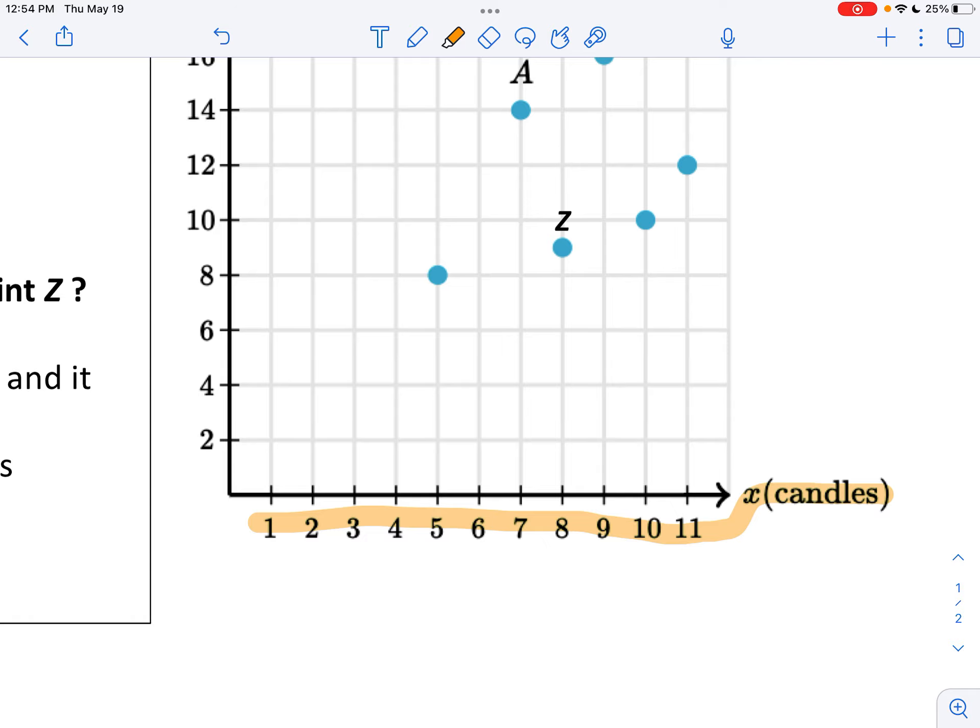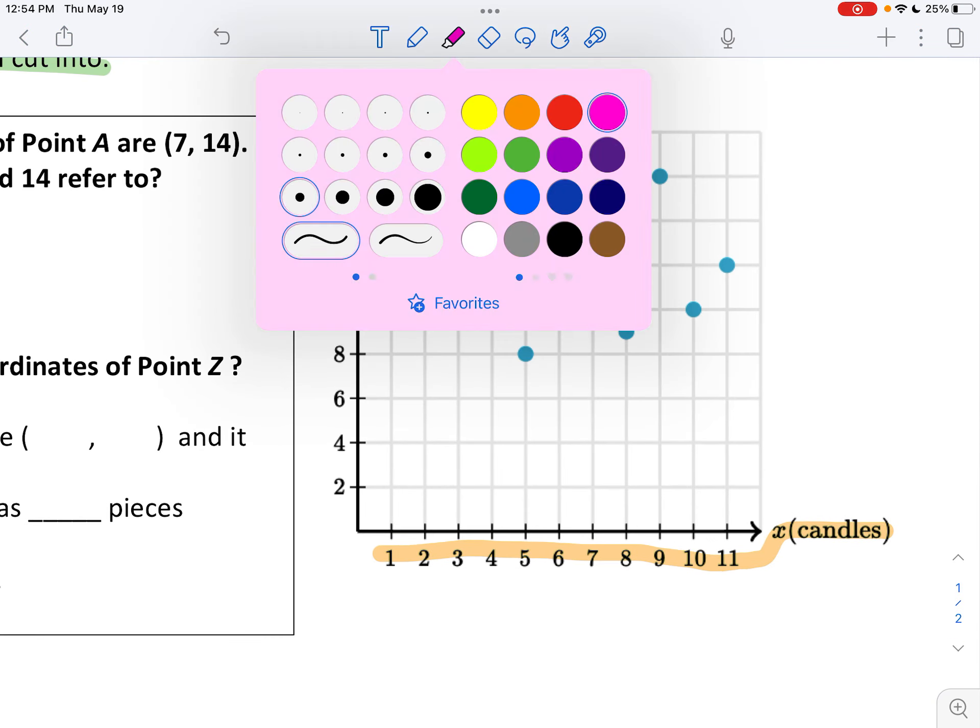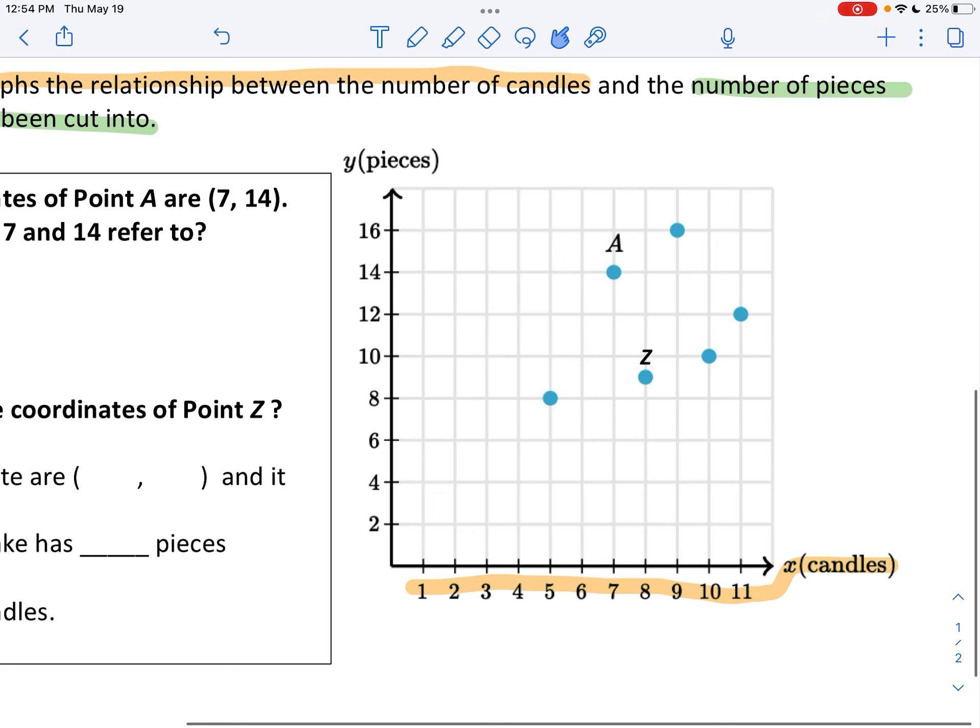And then if I look at the up and down part I see 2, 4, 6, 8, 10, 12, 14, 16, and that is the pieces of cake.